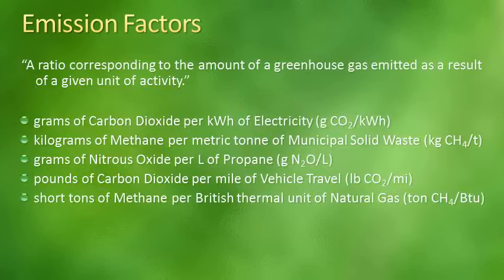An emission factor is a ratio corresponding to the amount of a greenhouse gas emitted as a result of a given unit of activity. Typically, when an emission factor is listed, it will be listed with a unit of quantity of greenhouse gas over a functional unit of activity. Some examples are listed below. Emission factors are often provided by government institutions such as the US EPA or Environment Canada, and may also be obtained from utility and service providers, and from academic and scientific research papers.